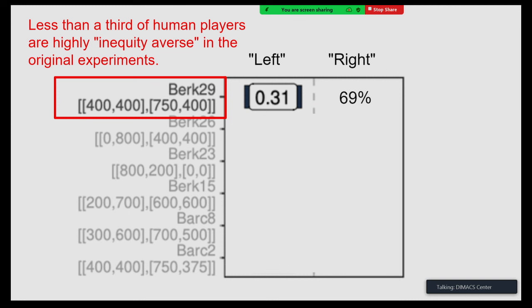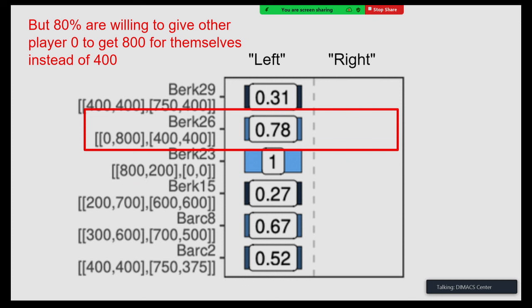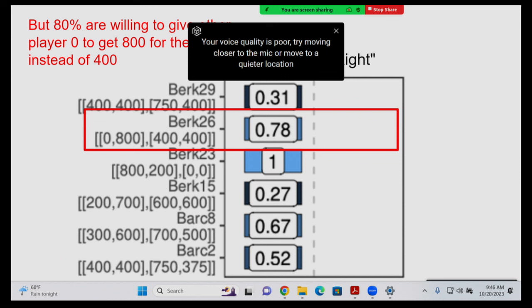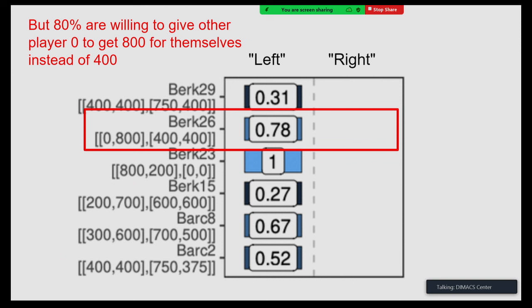About 30% of undergraduates chose left — presumably because they didn't want the outcome where the other person earns more, exhibiting inequity aversion. The only scenario where people were really unanimous in choosing left is one where you'd be giving up $200 just to spite people, which no one wants to do.